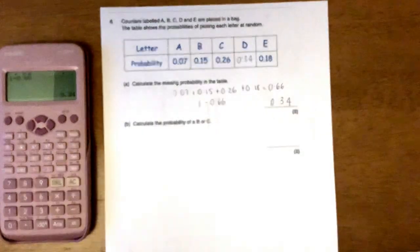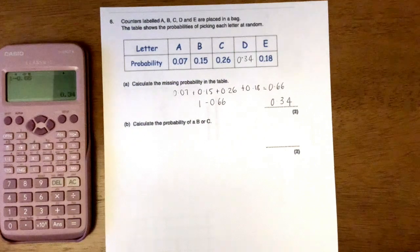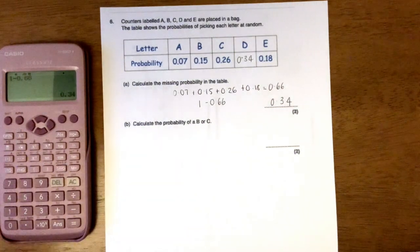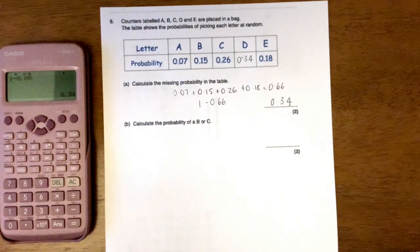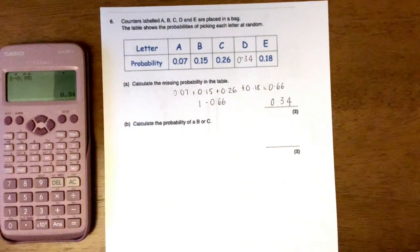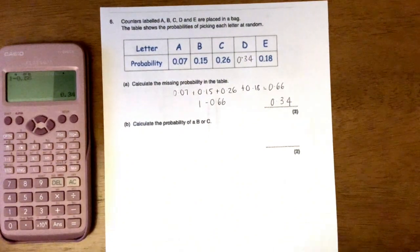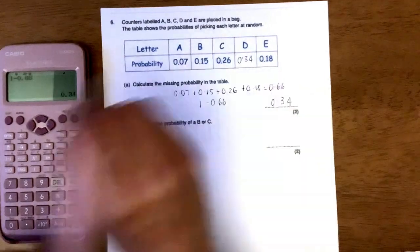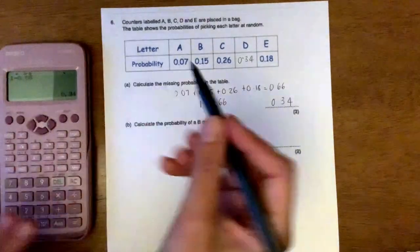The next part on this question, and this is something that's going to come up on your questions, is calculate the probability of a B or a C. So if I put my hand in the bag, what's the probability of me picking out a B or a C? So it's these two combined together.